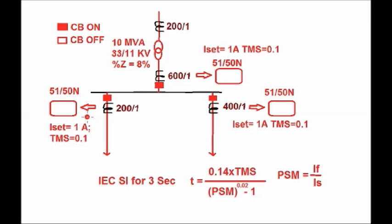From the CT secondary side, Feeder A has a non-directional overcurrent and earth fault relay connected. Similarly, Feeder B also has a non-directional overcurrent and earth fault relay connected. ANSI code 51 is for non-directional overcurrent protection and ANSI code 51N is for non-directional earth fault protection relay. On the LV side of the transformer, a non-directional overcurrent and earth fault relay is also connected from the CT secondary side.